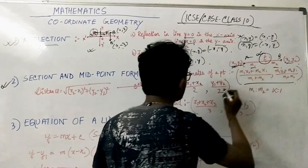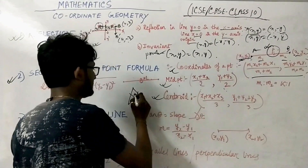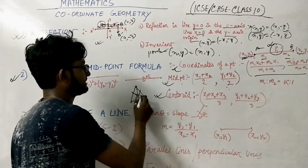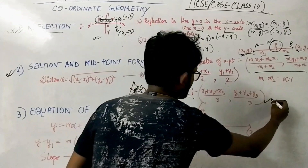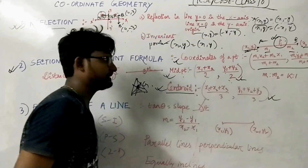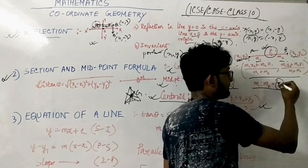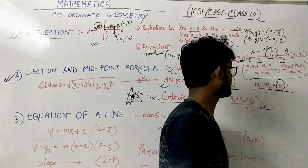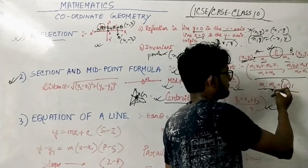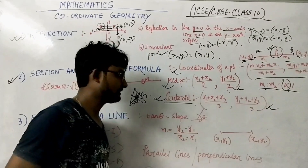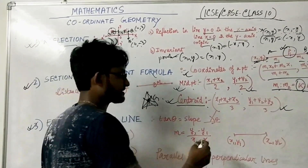If P is the midpoint, the formula simplifies to ((x1+x2)/2, (y1+y2)/2). For the centroid of a triangle, the formula is ((x1+x2+x3)/3, (y1+y2+y3)/3). There is also an alternative approach using ratio k:1 — I will come back to this when we do the numericals.